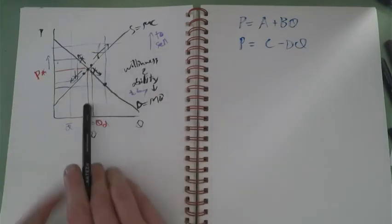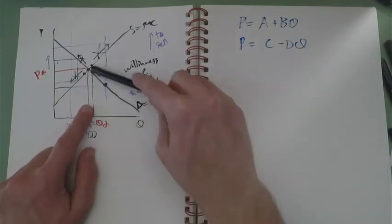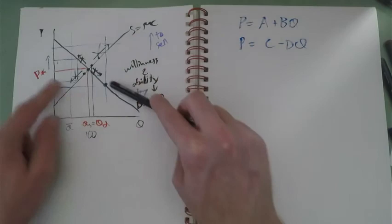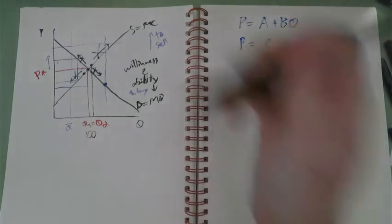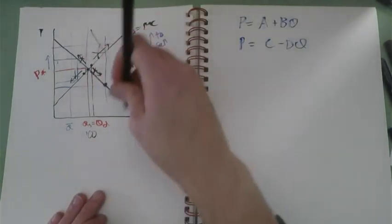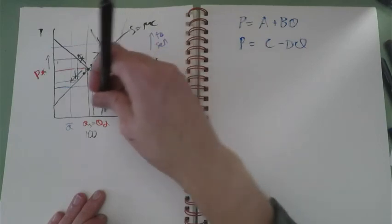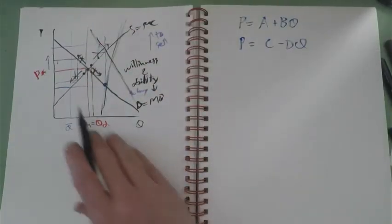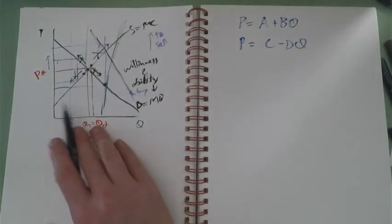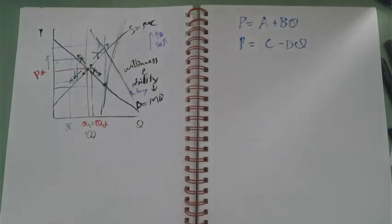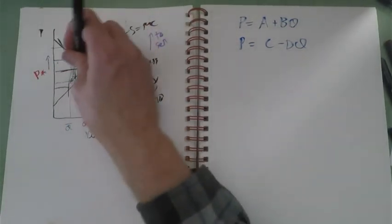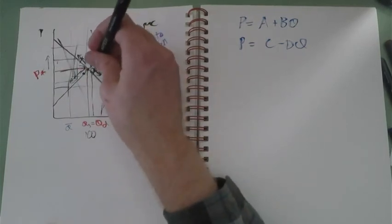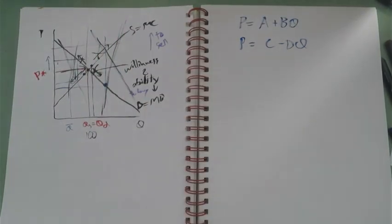So any of the units over here, the value to the buyer is less than the price and the cost to the seller is higher than the price. So we never get to this side of the supply and demand graph in the normal story. Likewise, if we're over here, we're missing opportunities for gains from trade. So we don't want to be here either. We move into this center point. We stop right there.